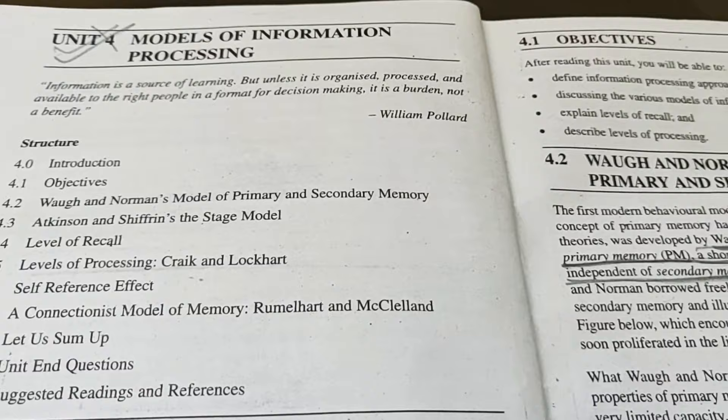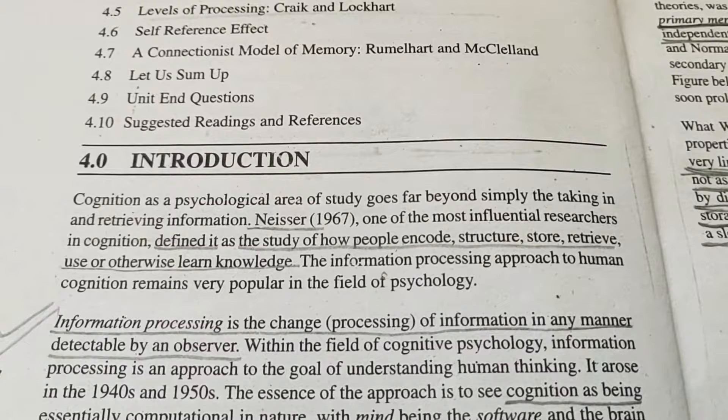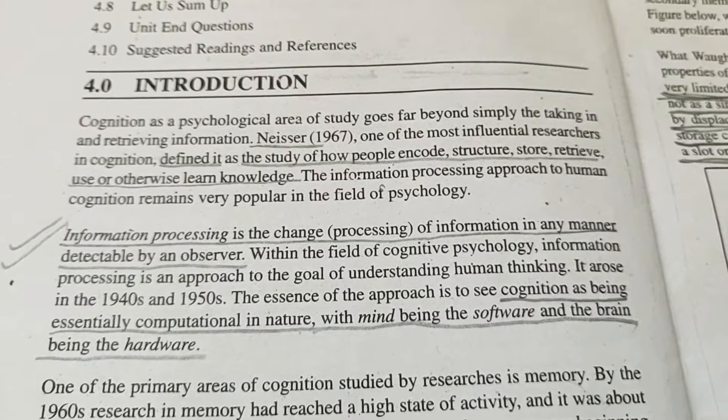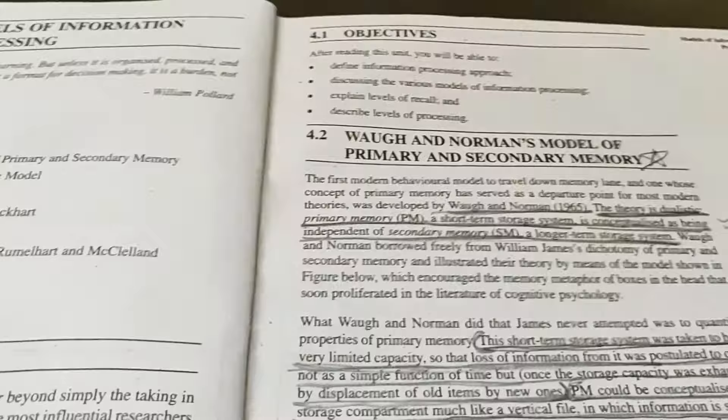Friends, in this chapter we are going to study a lot of models in which we will see that the information in our brain is processed and stored. So, what does information processing mean? It means to change some information in such a way that when we see it, we can understand what that information was. This word is used in computers, but our brain also does information processing. On this basis, there are many models.